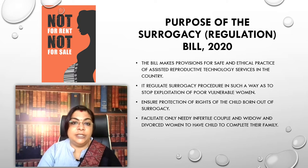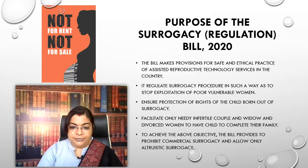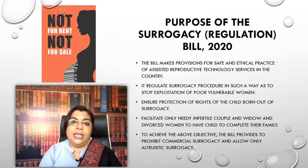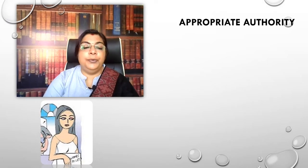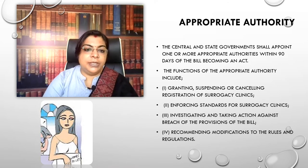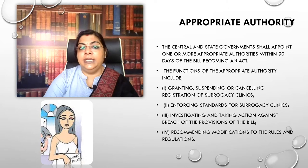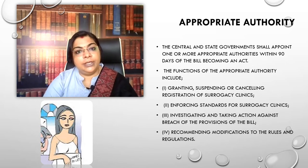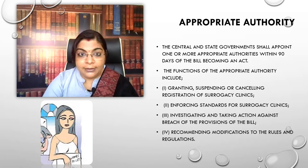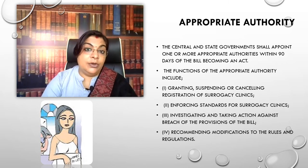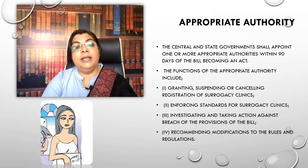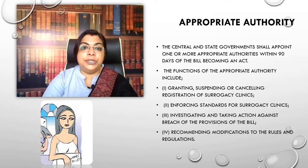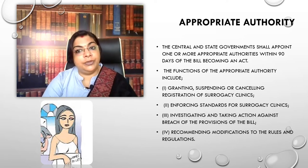The main objective of this bill is to prohibit commercial surrogacy and to encourage altruistic surrogacy. Another important feature is the appropriate authority. The central and state governments shall appoint one or more appropriate authorities within 90 days of the bill becoming an act. Their main functions include granting, suspending, or cancelling the registration of ART clinics.